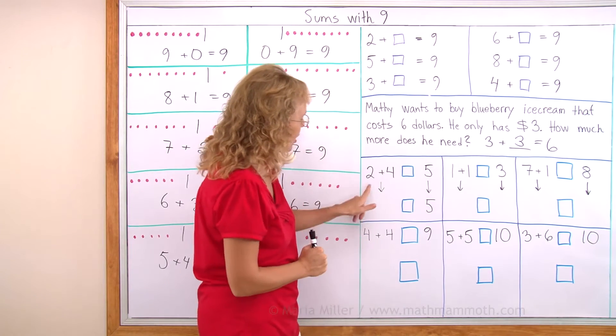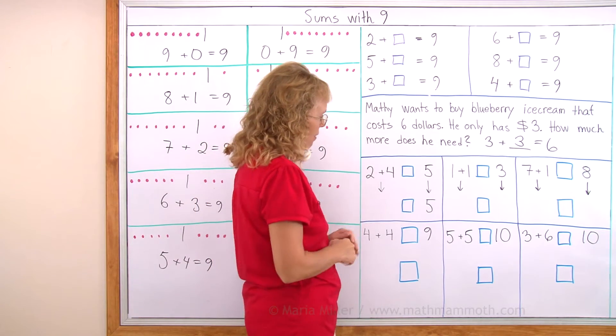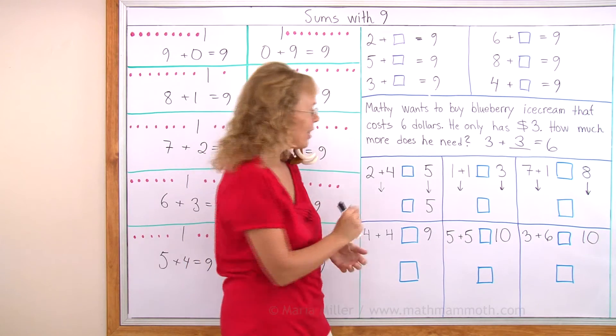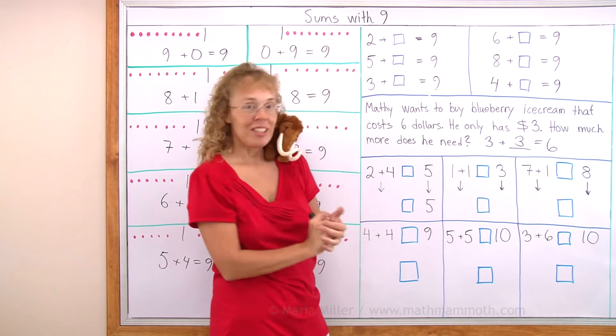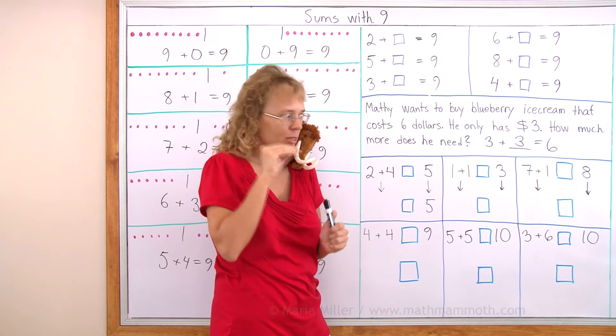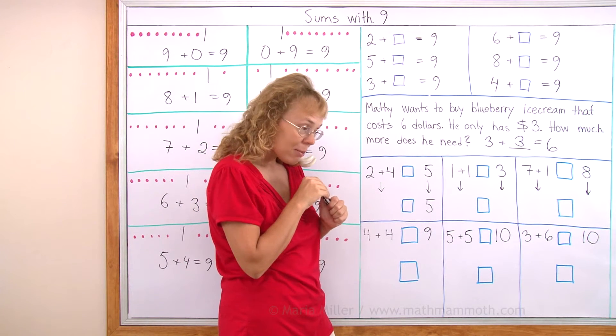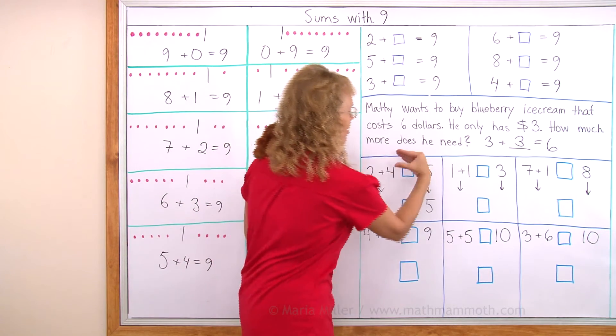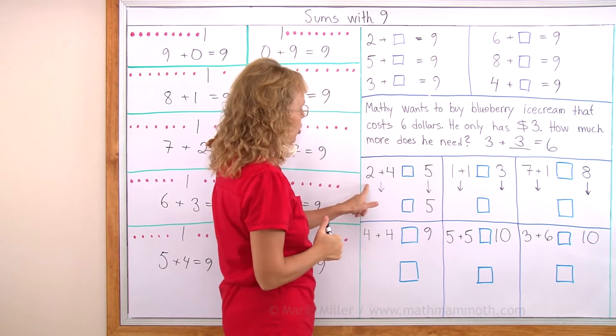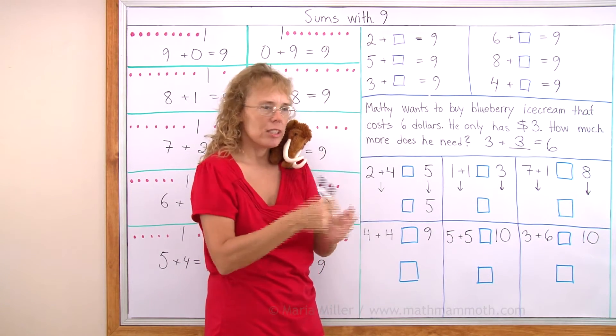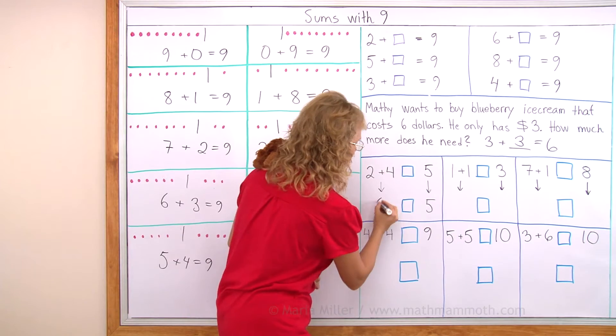Here we have something different. 2 plus 4 and a box and a 5. That is a comparison problem. We need to write either less than or greater than symbol in there. Remember that alligator's mouth? Or what's that Matthew? Mammoth's mouth? Yeah. That mouth goes this way or this way. But 2 plus 4, we need to first solve how much is that. 2 plus 4, how much is it? It's 6. I'm going to write it here.